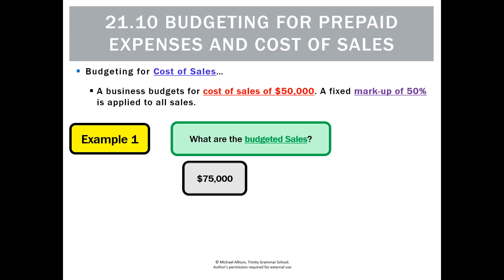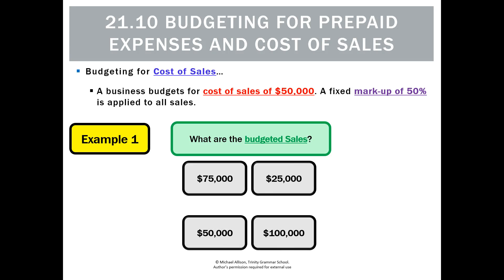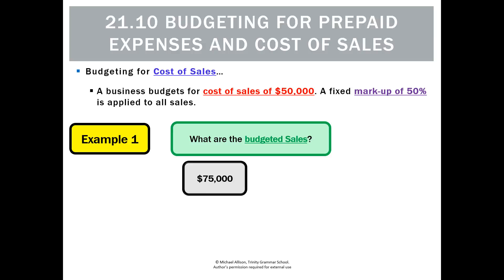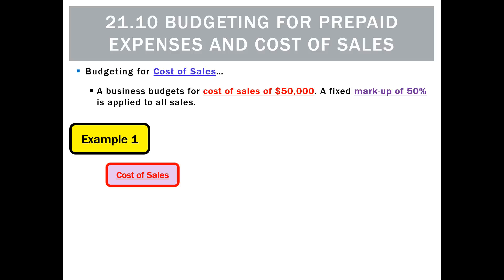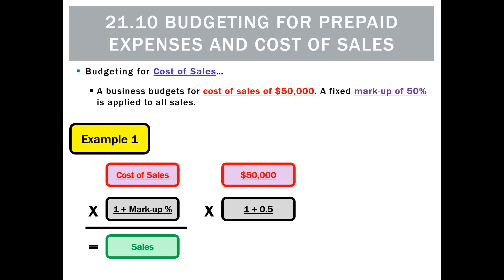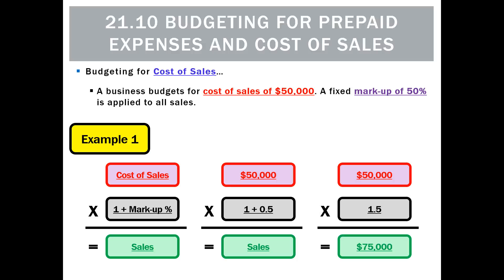Our options are $75,000, $25,000, $50,000, or $100,000. The temptation when we see 50% is to say that's double, so sales will be $100,000 — but that's actually wrong. $50,000 would be a markup of zero, and $25,000 makes no sense. The right answer is $75,000. The formula to use is: cost of sales × (1 + markup) = sales. So 50,000 × 1.5 = $75,000. As long as we use that formula, we'll always get the right answer.